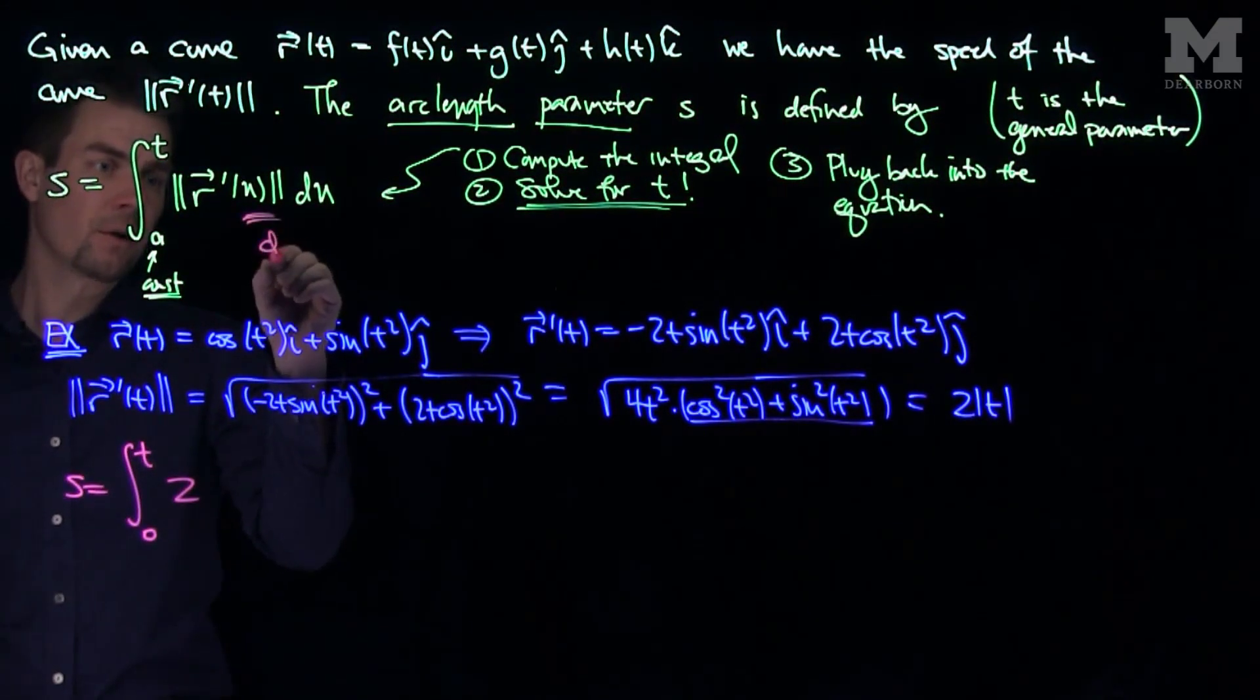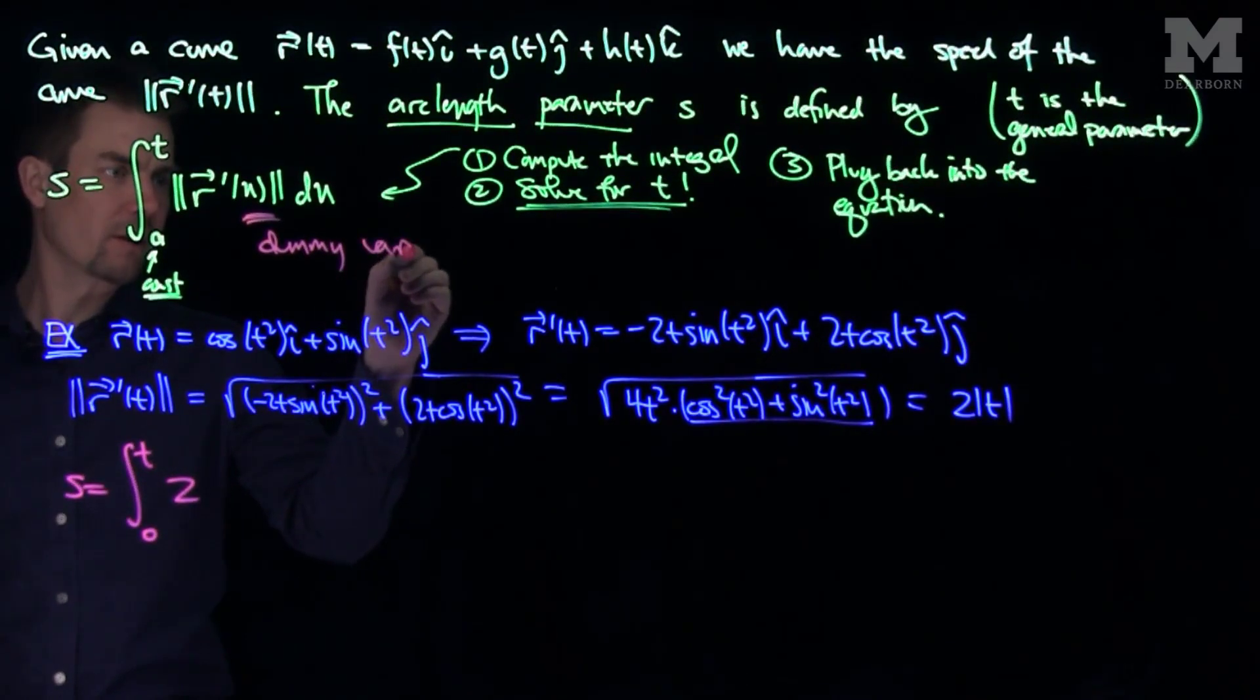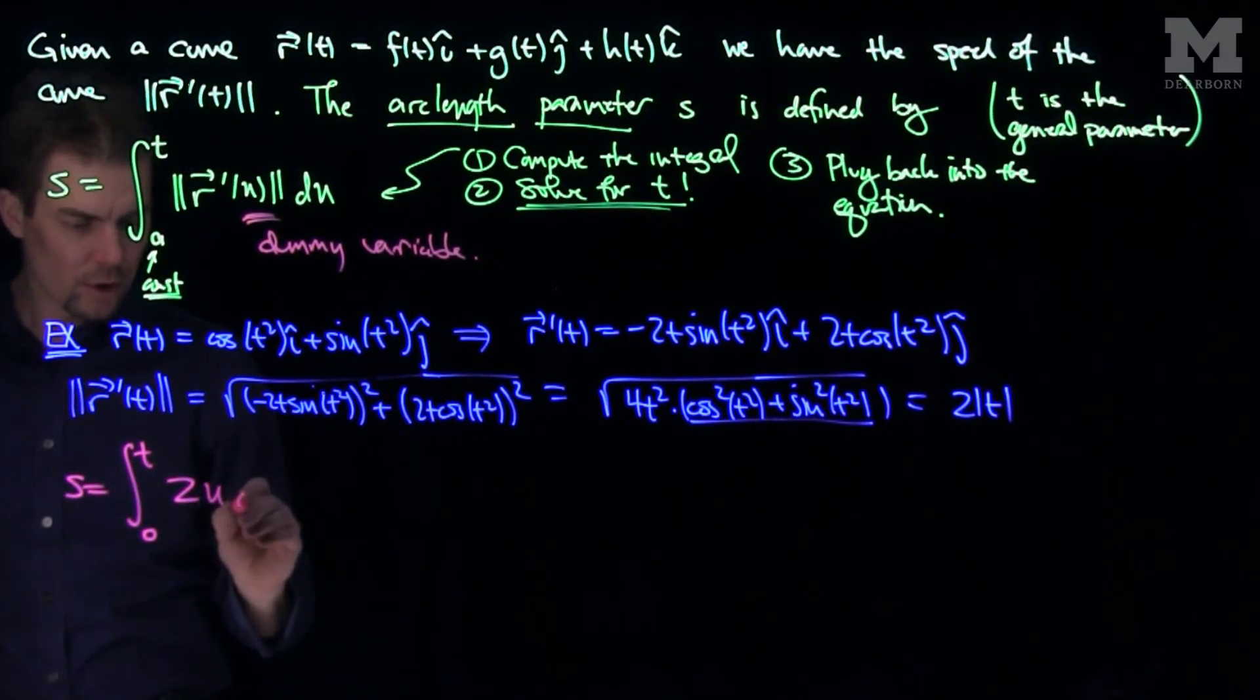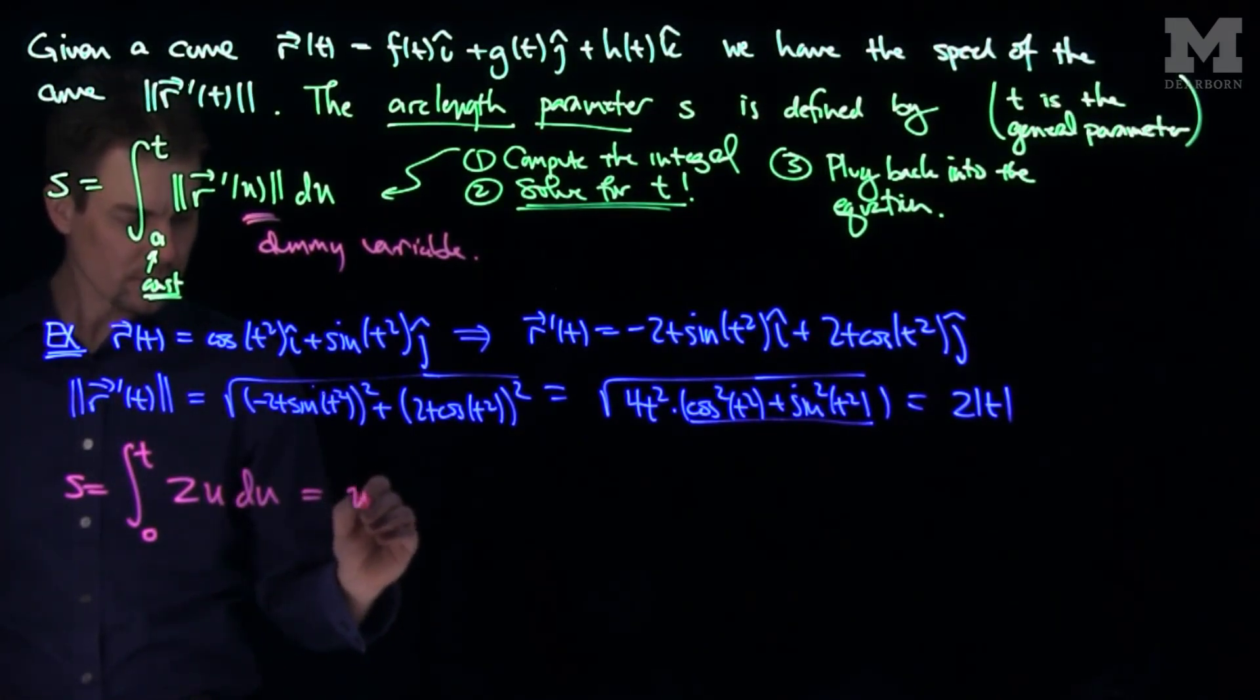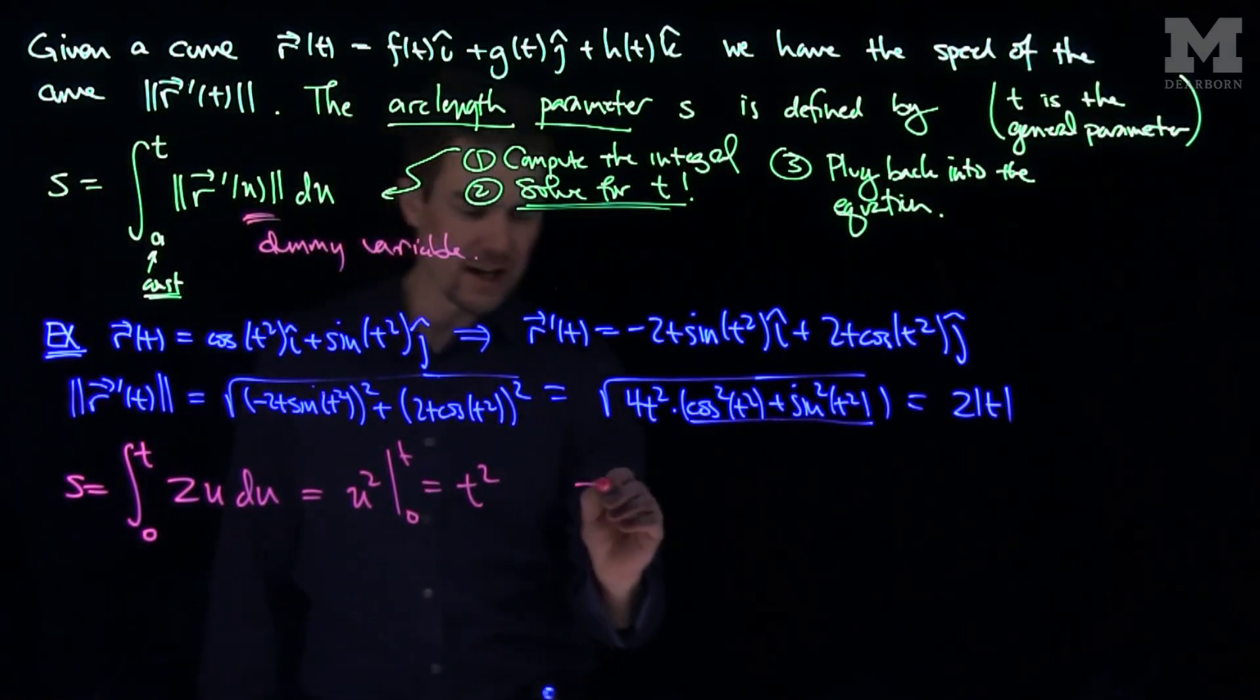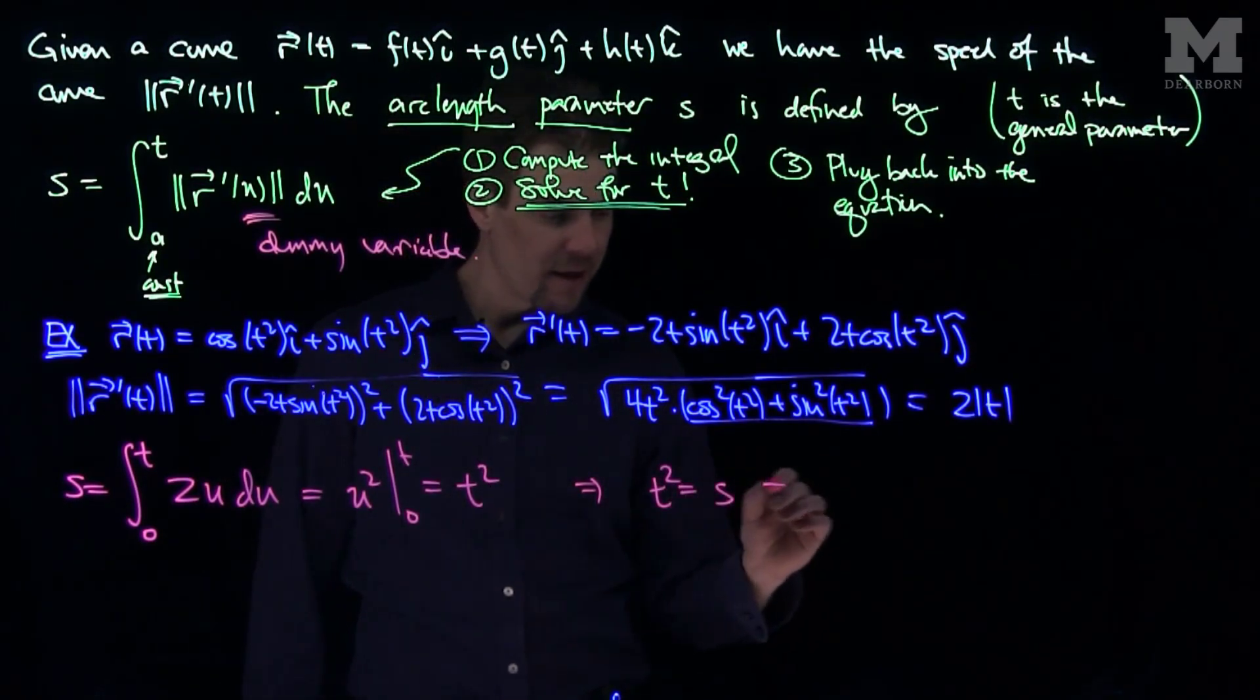Remember that u here is a dummy variable, so we need to use a dummy variable since I'm already using t as my limit of integration. So that's 2u du. This will be equal to u squared from 0 to t, which is t squared. So the relationship we have is that t squared equals s.